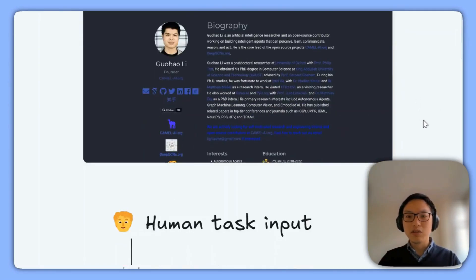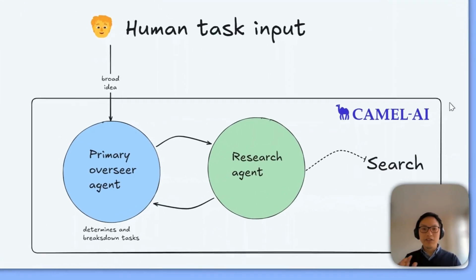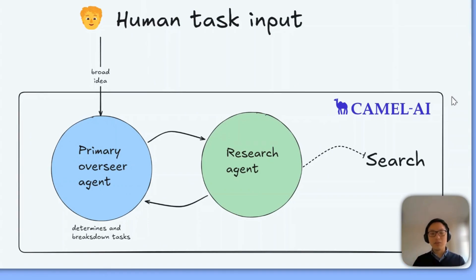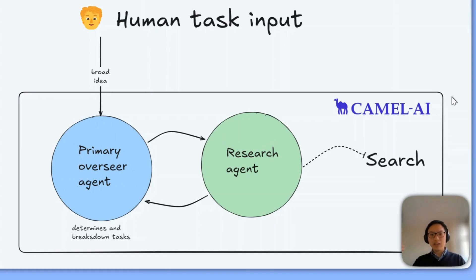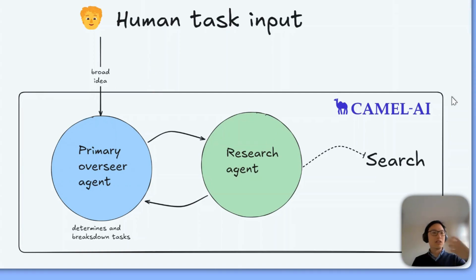So onto what I'm going to show today. This is a very simple multi-agent framework that I built with Camel AI. I wanted to have a human task at the top where we say, 'Hey agents, I need you to complete this broad task.' That gets passed into the blue agent, which is the planner and overseer agent that will break down the task into chunks to be executed by a worker or researcher agent in green. I've given the research agent a search engine tool so it can go out and look for more information.